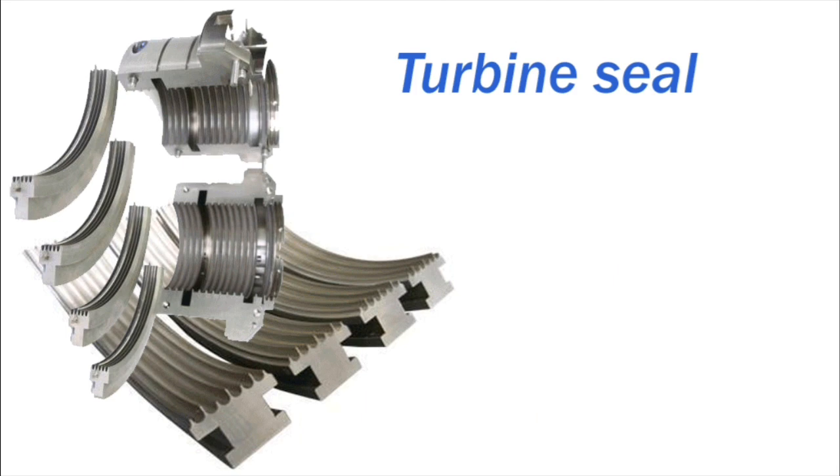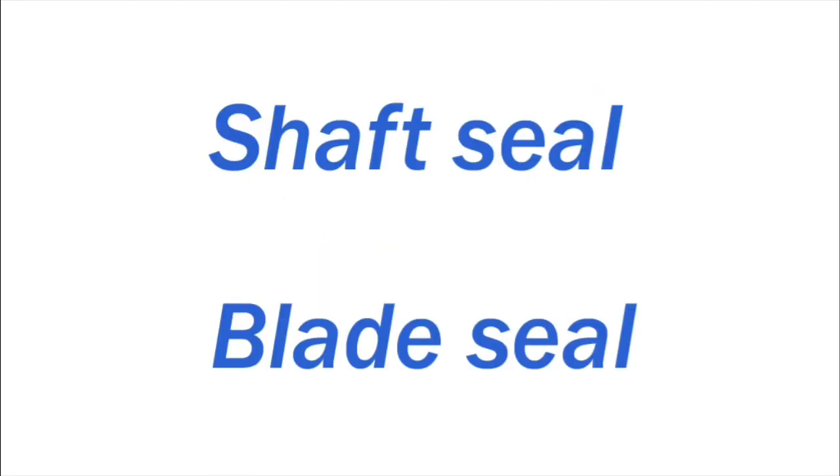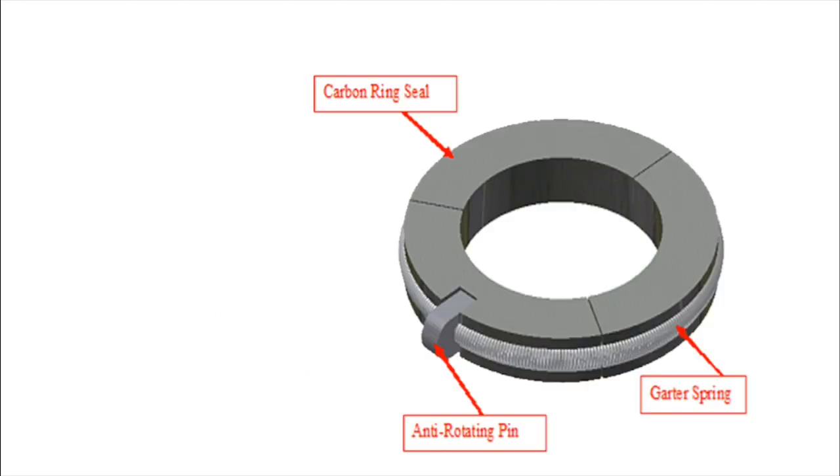Turbine Seals. Seals are used to reduce the leakage of steam between the rotary and stationary parts of the steam turbine. Depending upon the location of seal, the seals are classified as two types. These are shaft seal and blade seal. Shaft Seals are used to prevent steam leakage where the shaft extends through the casing. In the case of a small turbine, carbon rings are used as shaft seal, up to the surface speed of the shaft is 50 meter per second.